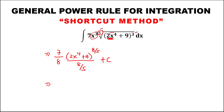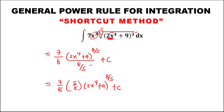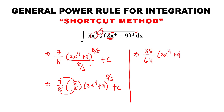To simplify, 7 over 8 times the reciprocal 5 over 8, then (2x⁴ + 9) to the power 8 over 5, plus C. So 7 times 5 equals 35, and 8 times 8 equals 64. Then we have (35 over 64) times (2x⁴ + 9) to the power 8 over 5, plus C.